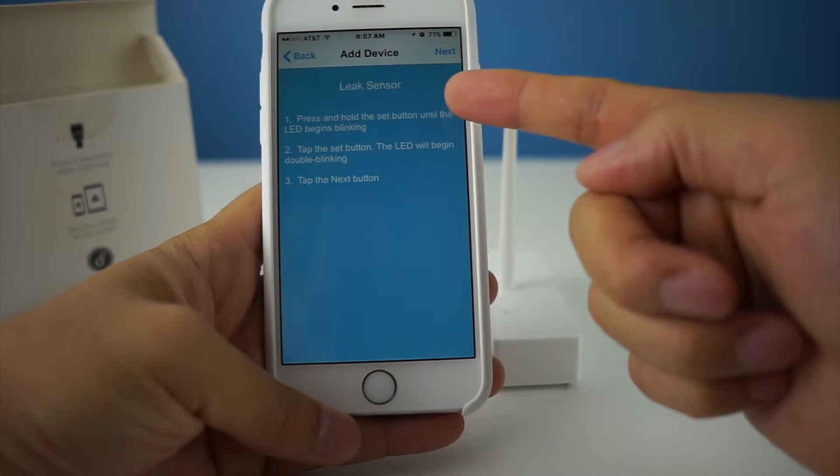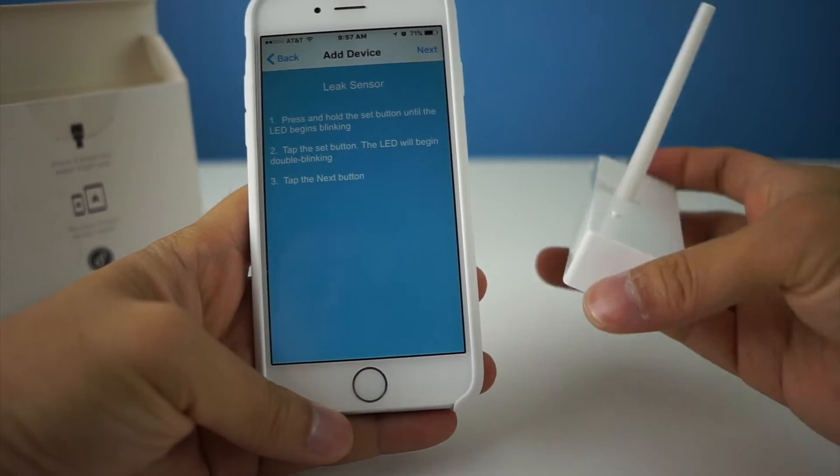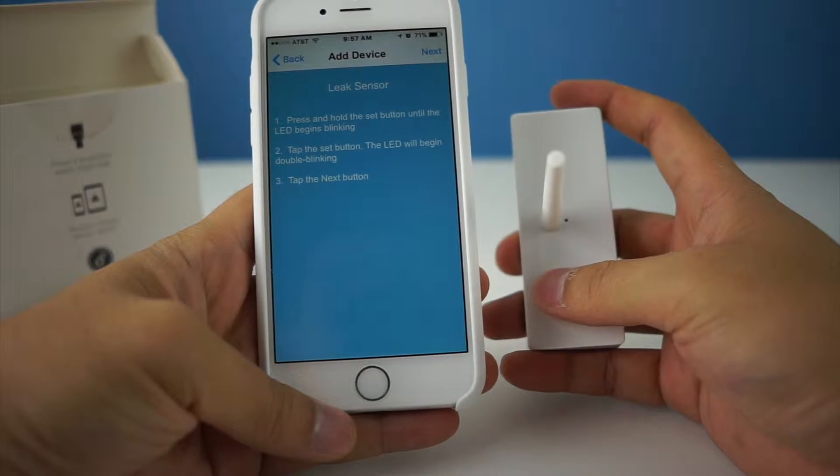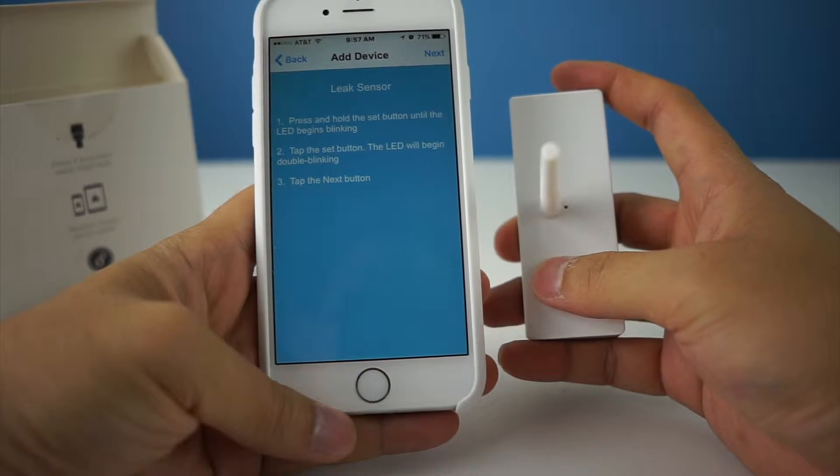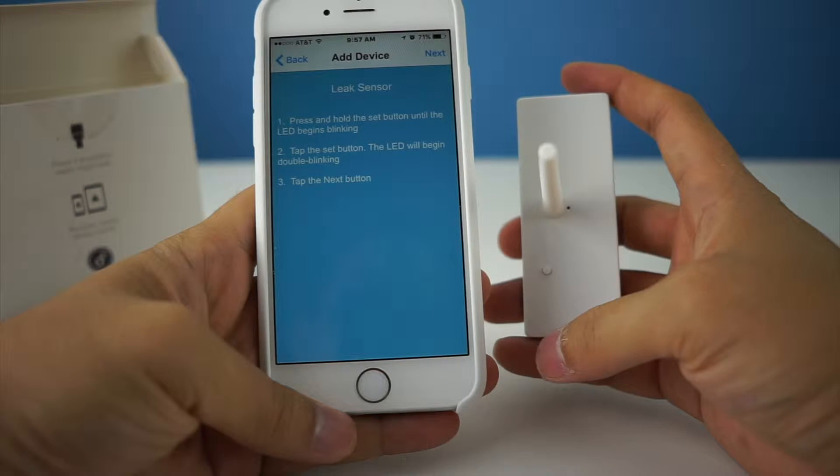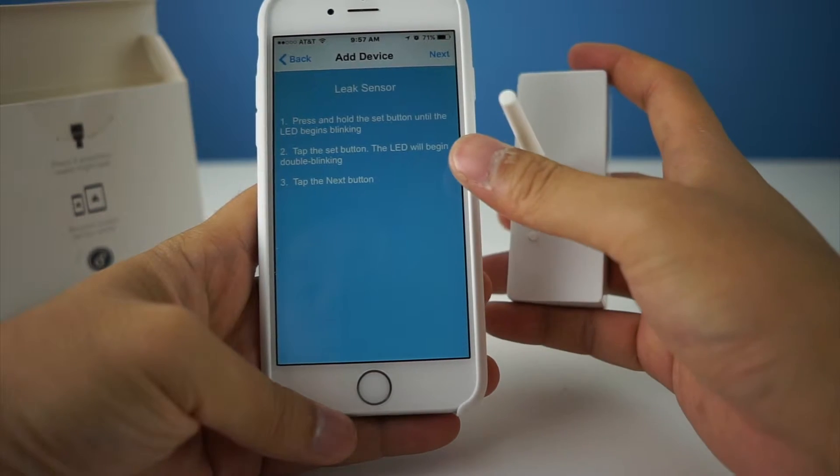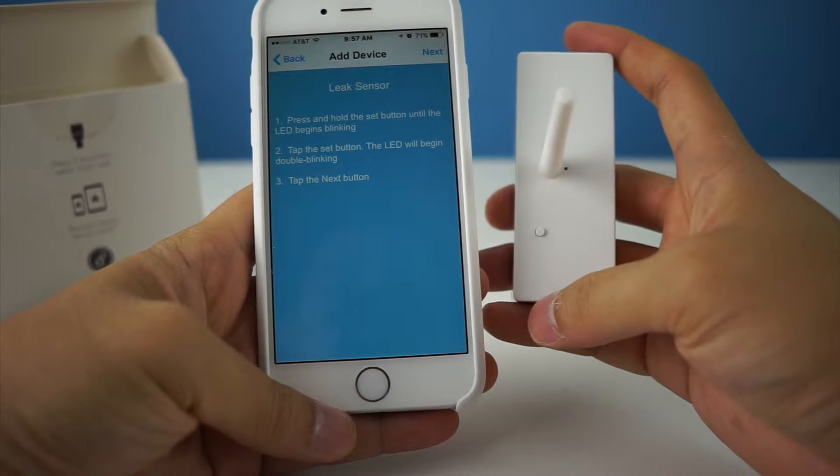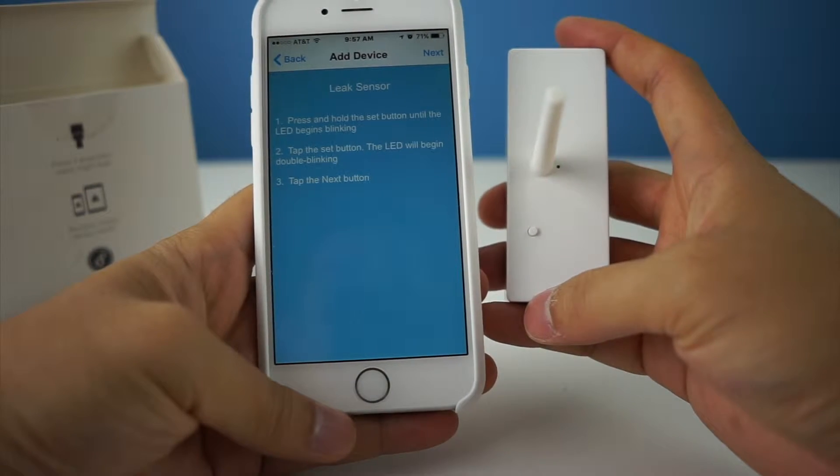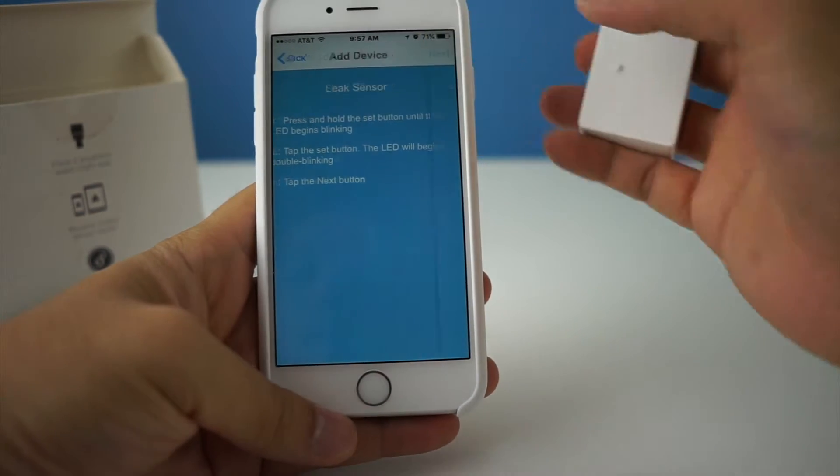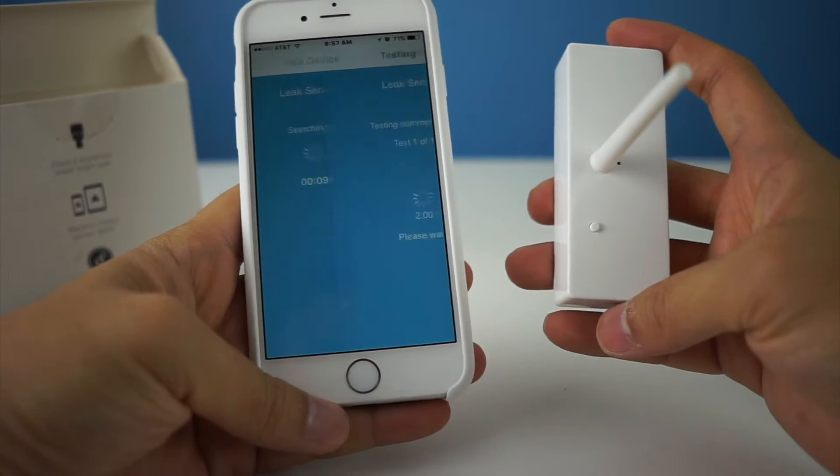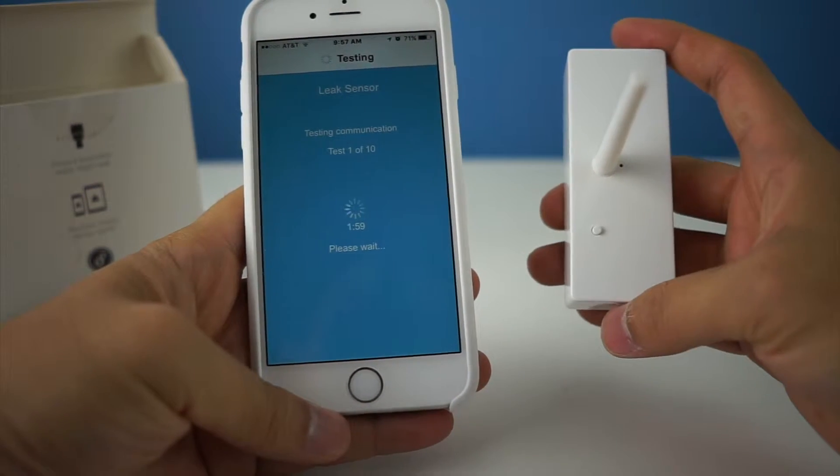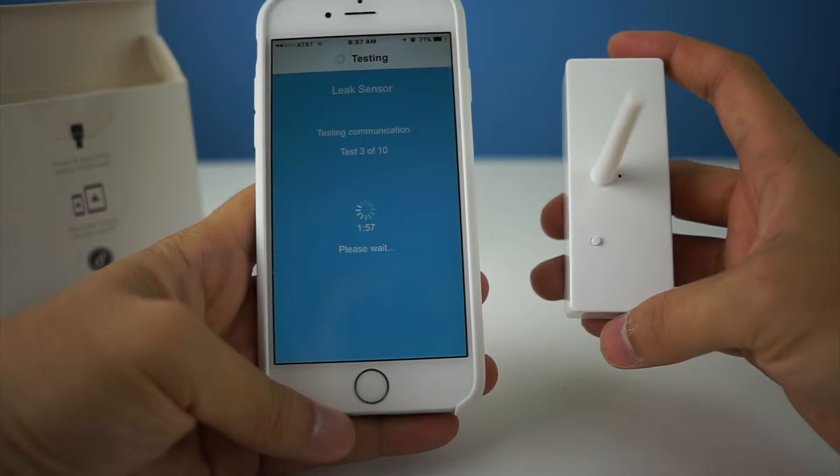It tells you to hold the button until it begins to blink, and then you tap the set button and it'll begin double blinking. So a quick press - that was double blinking. You hit next, searching for the sensor, finds it, does the communication.